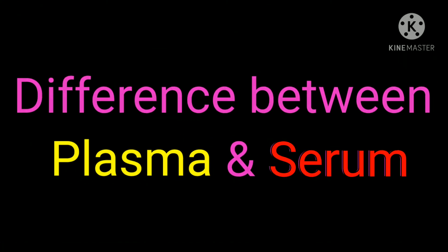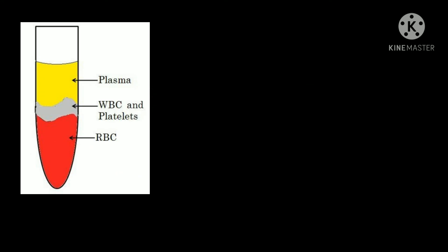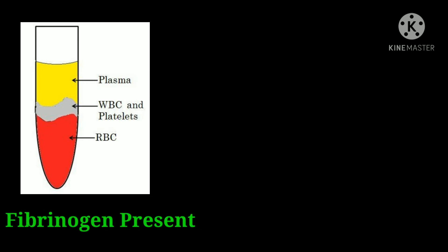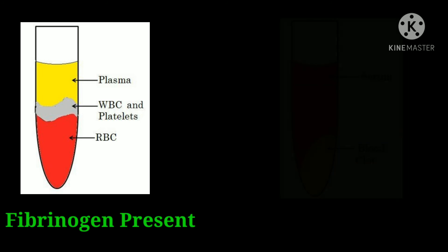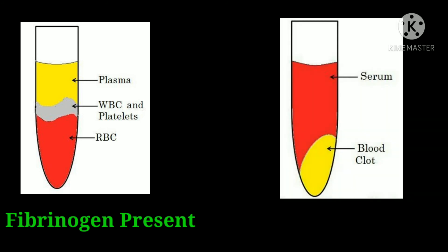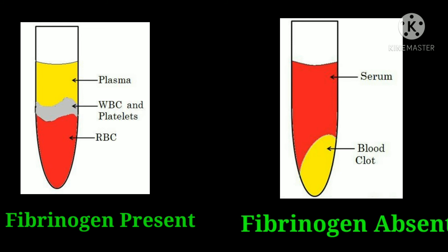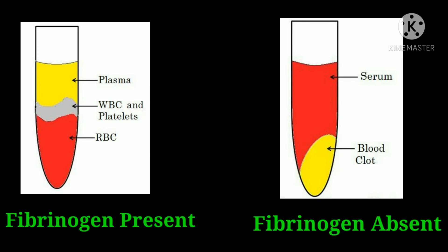Difference between plasma and serum: Plasma is that part of the blood which contains the blood clotting agent called fibrinogen, because we added an anticoagulant agent which prevents the conversion of fibrinogen into fibrin. While serum is the fluid part of the blood and does not contain fibrinogen, because fibrinogen has been converted to fibrin, which in turn helps to form a blood clot.